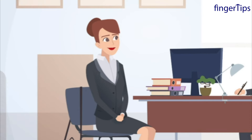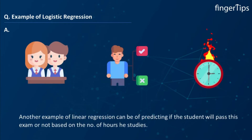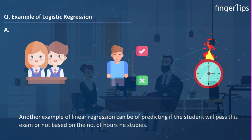Can you give an example? Suppose we want to predict if it will rain or not, based on two factors: temperature and humidity. Here, rain is the dependent variable and temperature and humidity are the independent variables. Another example can be predicting if a student will pass their exam or not, based on the number of hours they study.